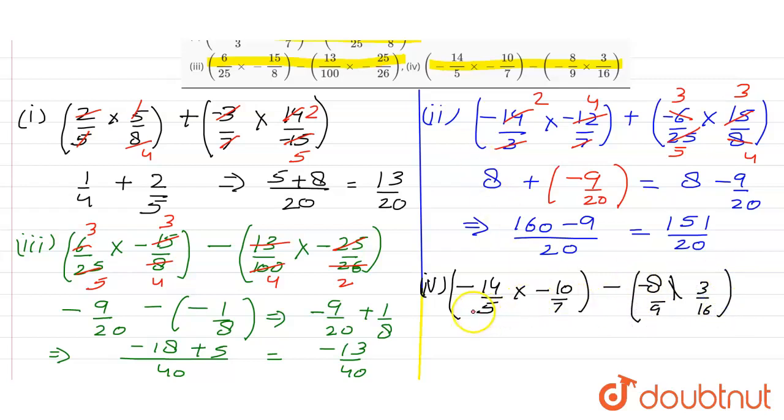Minus, minus 8 by 9 multiplied with 3 by 60 bracket. Again, let's see what all we could cancel. It will go two times, it will go two times, it will also go two times. Two negatives gives us one positive.